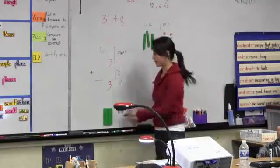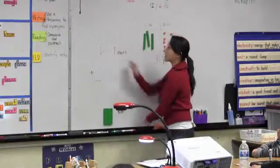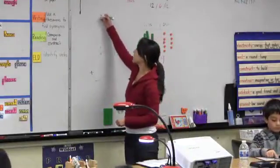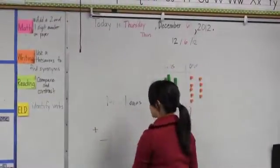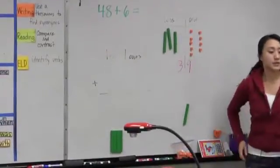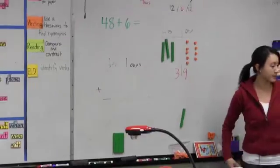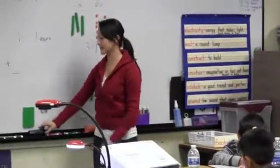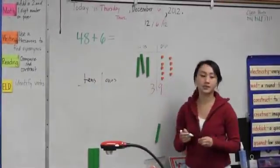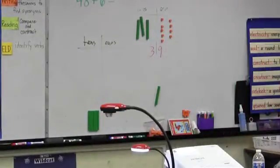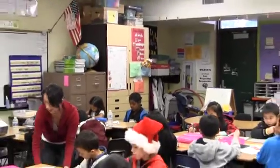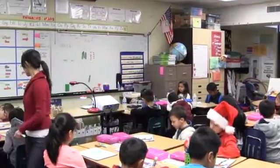Let's try some — you have your whiteboard out. I'm going to write a problem for you going across and I want you to try writing the problem going down and lining it up. Try this one: forty-eight plus six. Just write the problem going down first so I can check it, then I'll ask you to solve it. Make sure that you are lining it up in the right place value.